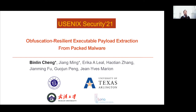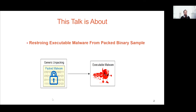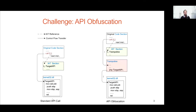This talk is about storing executable malware from a packed binary sample, which is the final goal of Windows binary unpacking. To recover an executable malware from a packed sample, we have to address a challenging API obfuscation. For the standard API call, the control flow transfers from the API call site to the target API directly. If the packer uses API obfuscation, the control flow will go through a trampoline before reaching the target API call, making unpacking tools hard to resolve API names.